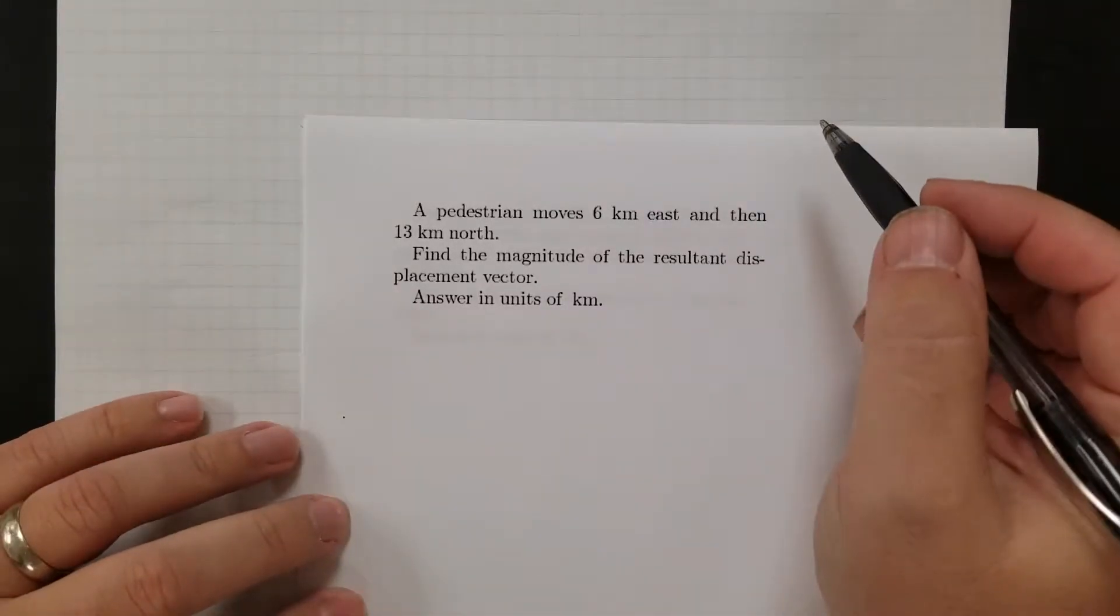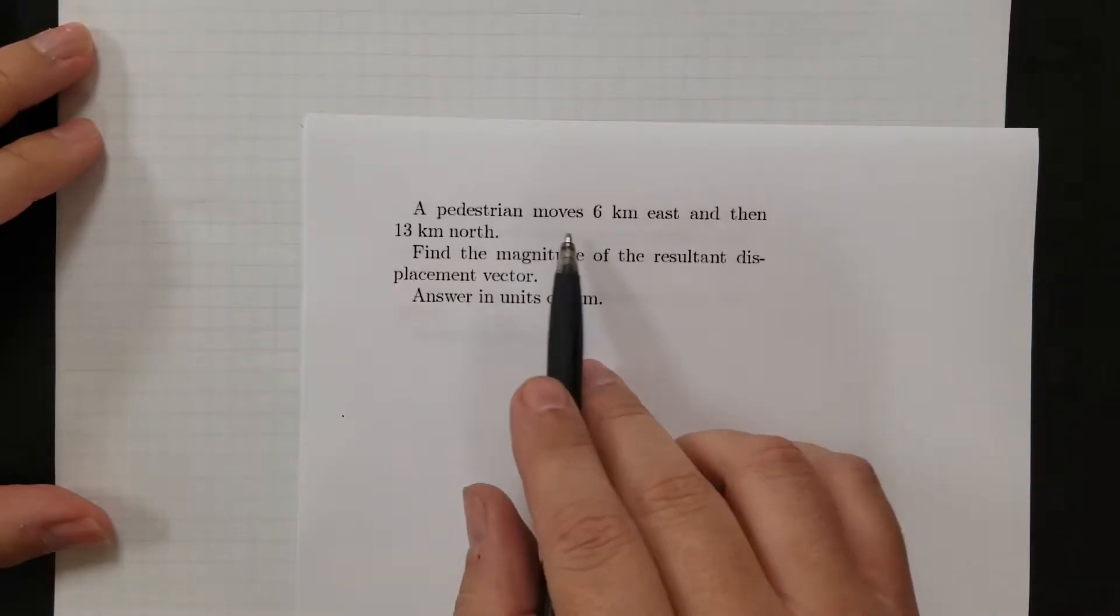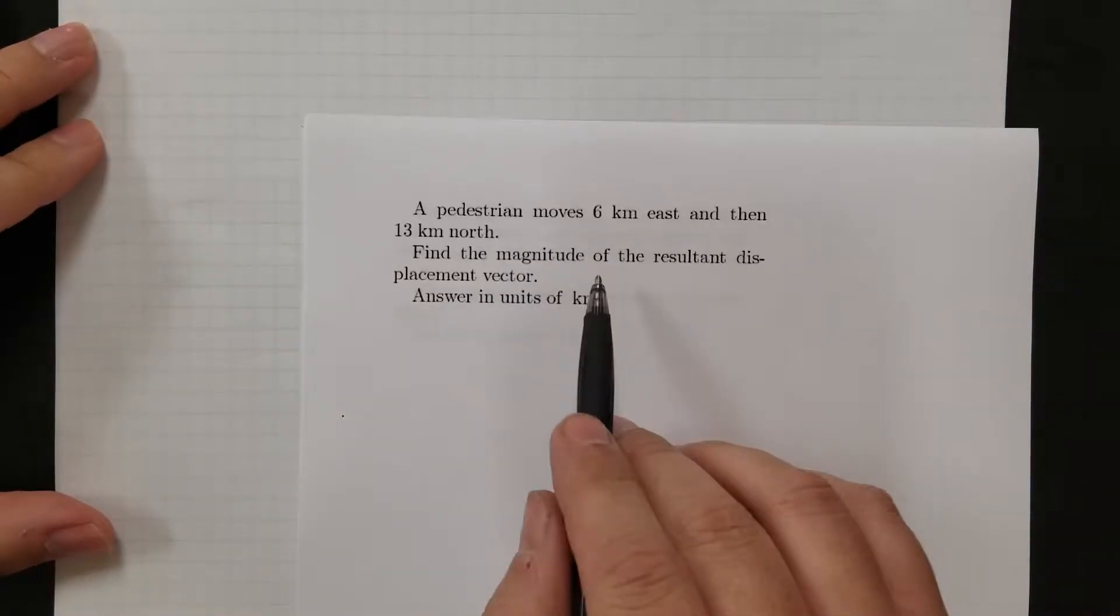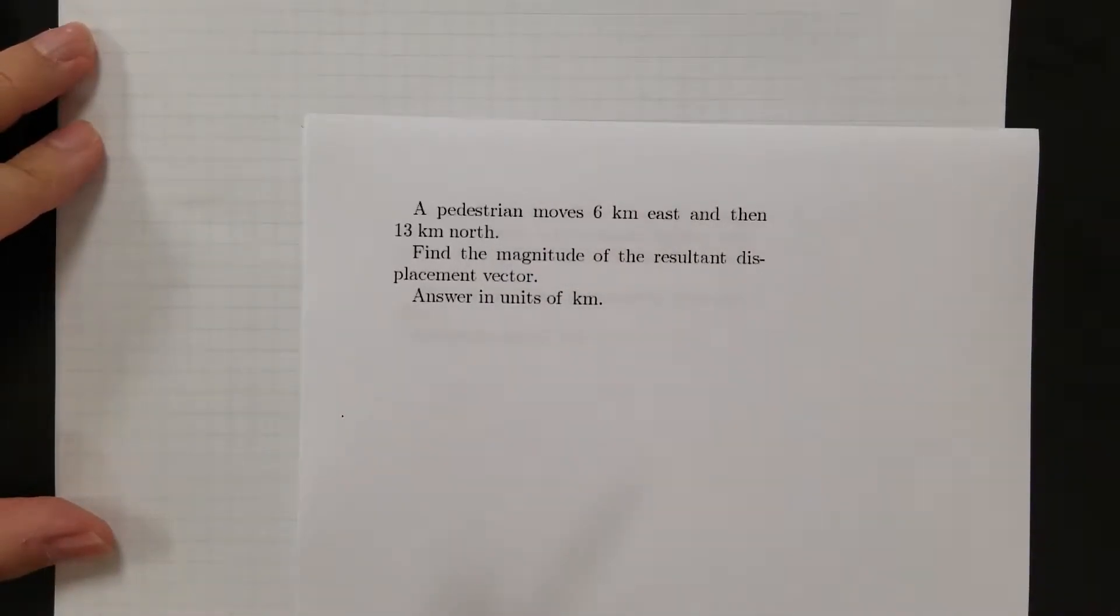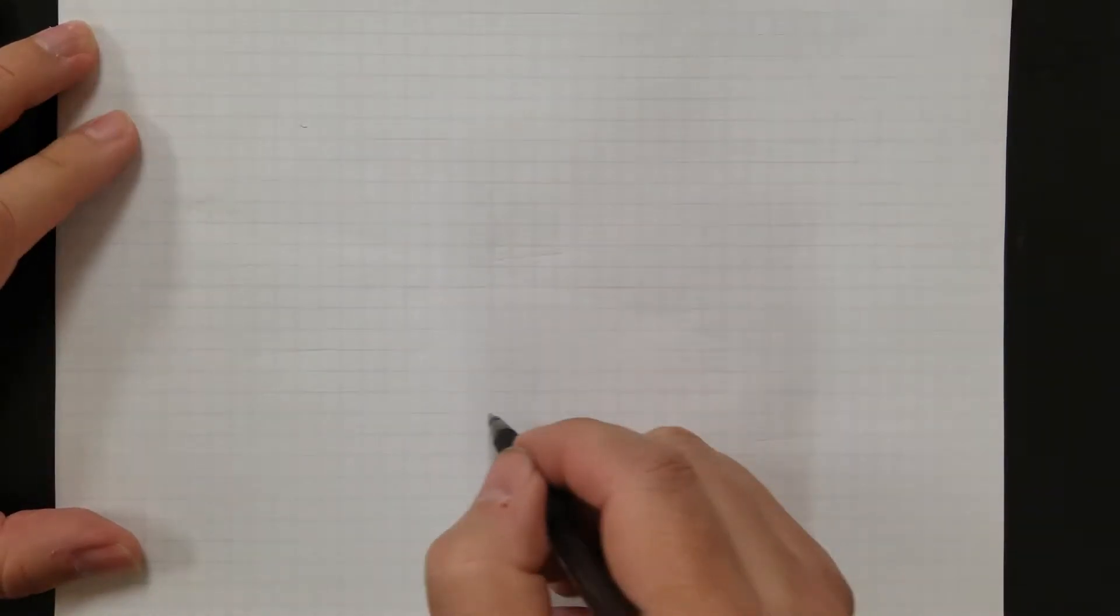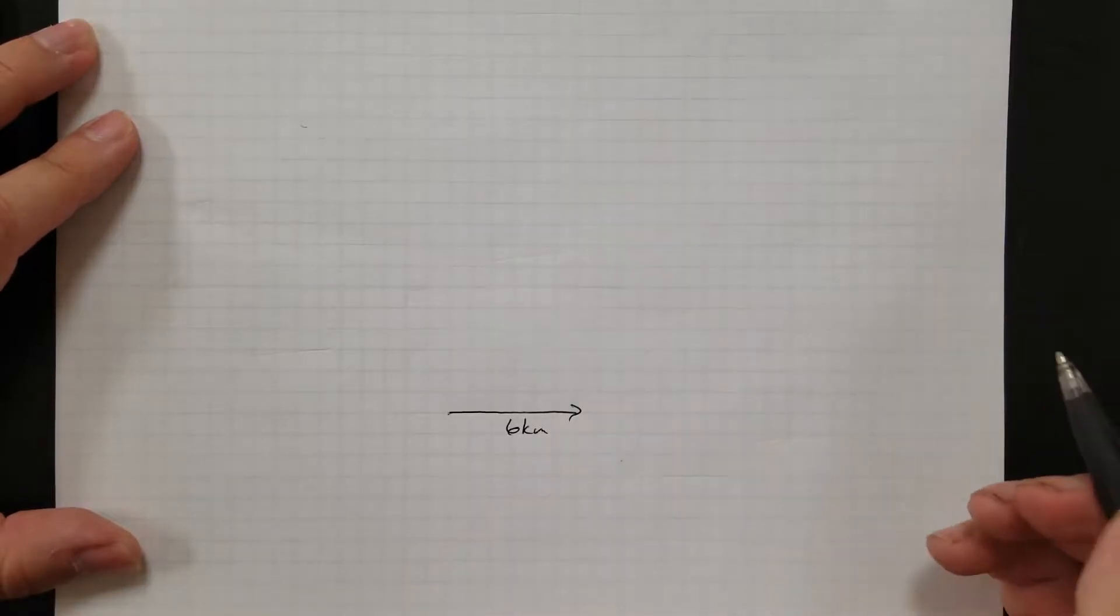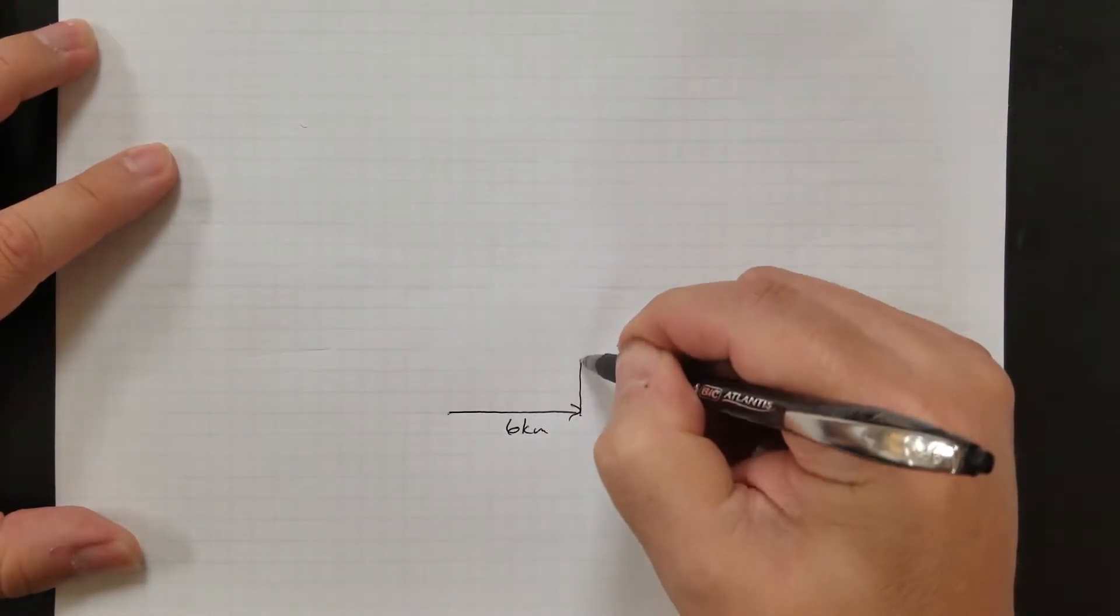Okay, so we're going to practice solving a bunch of vector problems. So here's this first one. Pedestrian moves 6 kilometers east and 13 kilometers north, so we want the magnitude of the resultant displacement. So what you have to do before you do anything, obviously most important with vectors is you need to draw it out. So here's 6 kilometers east, and then I'm going to go 13 north.